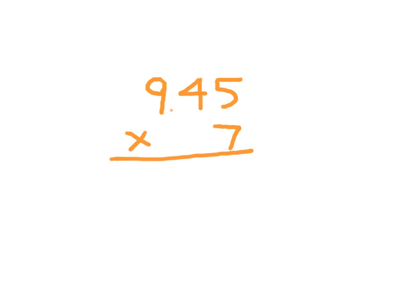9.45 times 7. Starting with 7 times 5, which is 35. Place the 5, regroup the 3. 7 times 4, which is 28, plus 3, which is 31. Place the 1, regroup the 3. 7 times 9, which is 63, plus 3, which is 66.